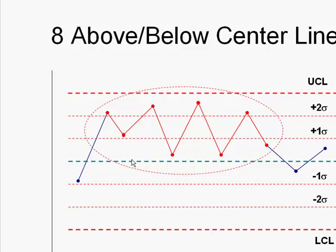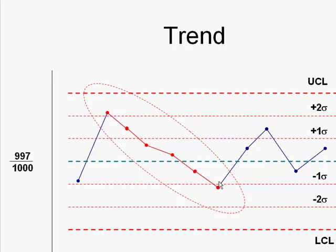We could also have eight points above or below the center line. This is what's known as a run. One wouldn't expect there to be that many points above the center line. We can also see things like a trend. So six points descending or six points ascending are considered to be a trend.